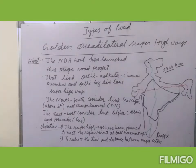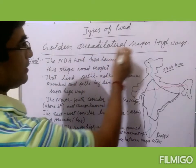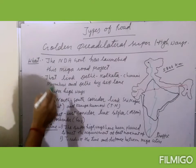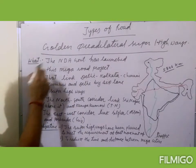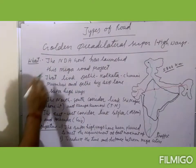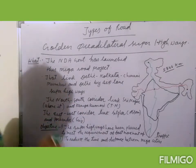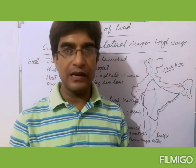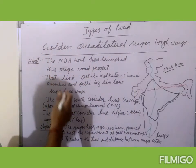So students, this is the first type of roadway — it is the Golden Quadrilateral Super Highway. Super highway means where there are more than four lanes; in this super highway there are six lanes.